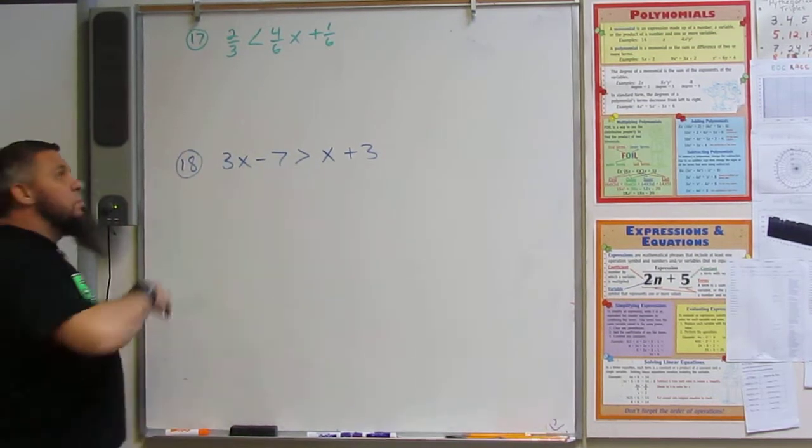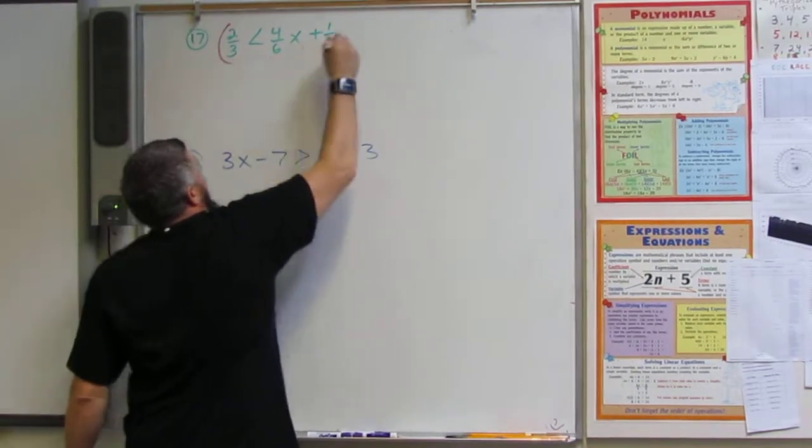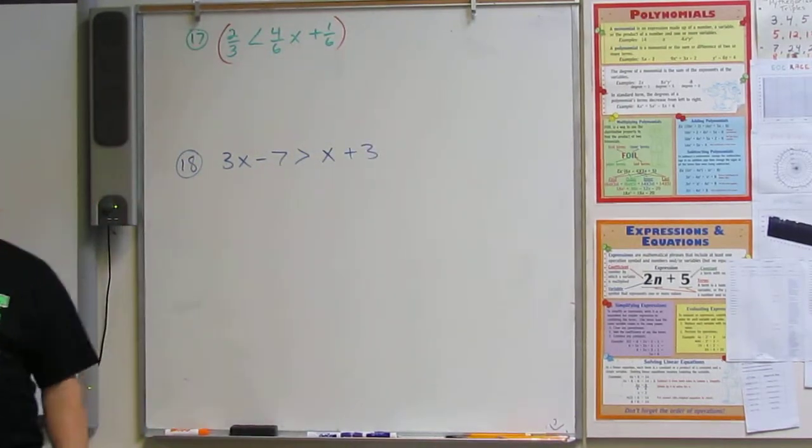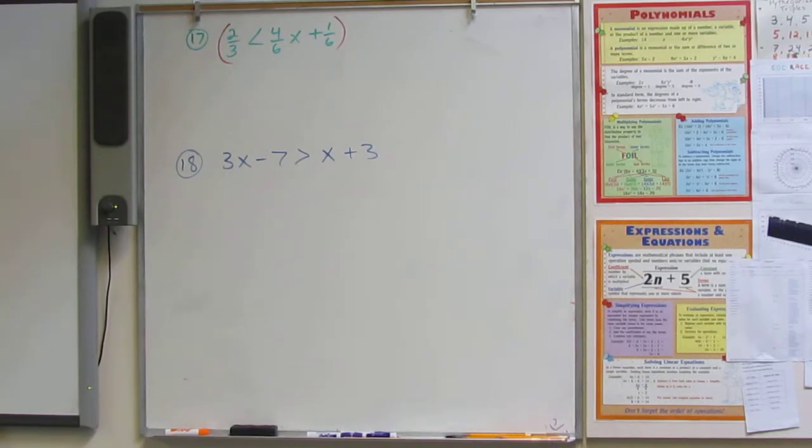Multiply it all. Multiply everything by the greatest common factor. The number, the biggest number that the denominators go into.